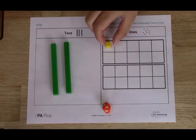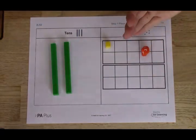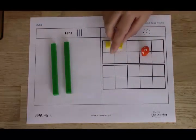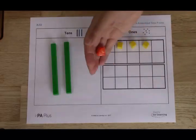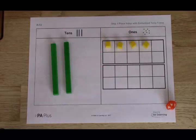As before once the regrouping is done continue to roll the dice. Adding the number of ones rolled into the tens frame. Keep going until a tens frame is full.